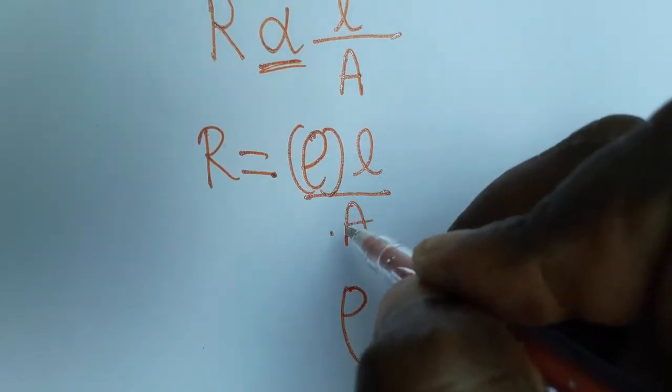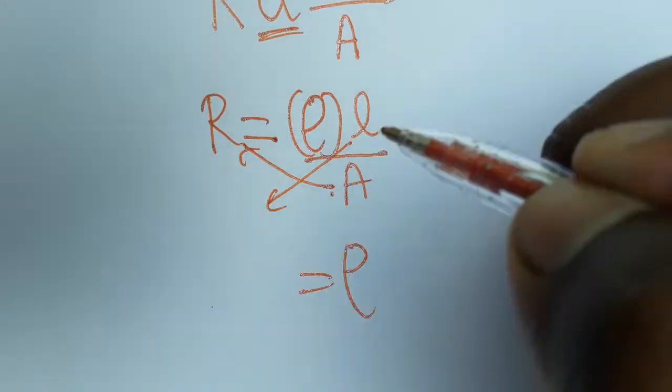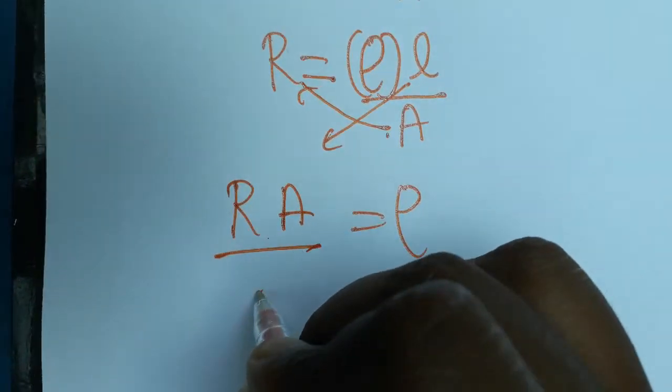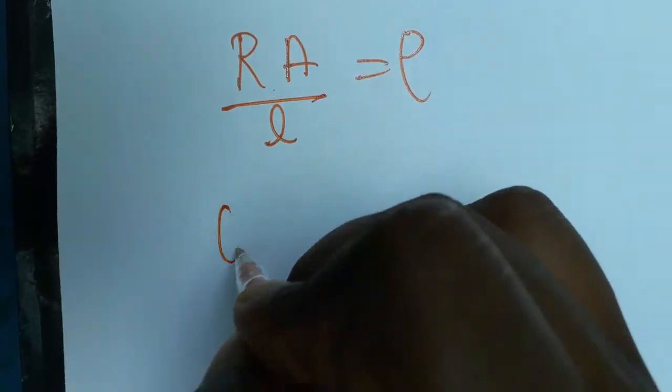Now our subject is resistivity. I am bringing area to this side and length as a denominator. Just doing cross multiplication, R times A by L, so that means resistivity is equal to R A by L.